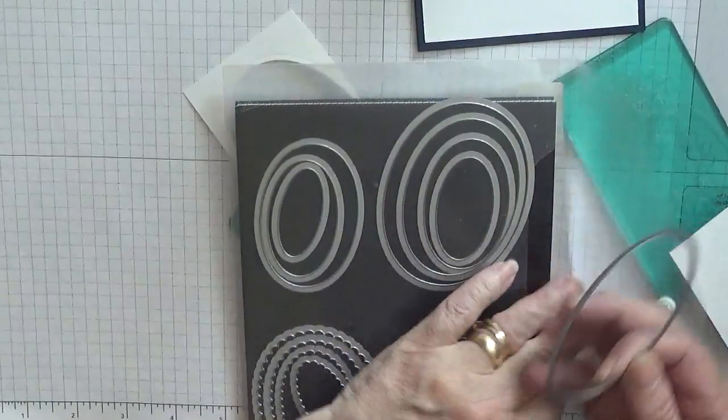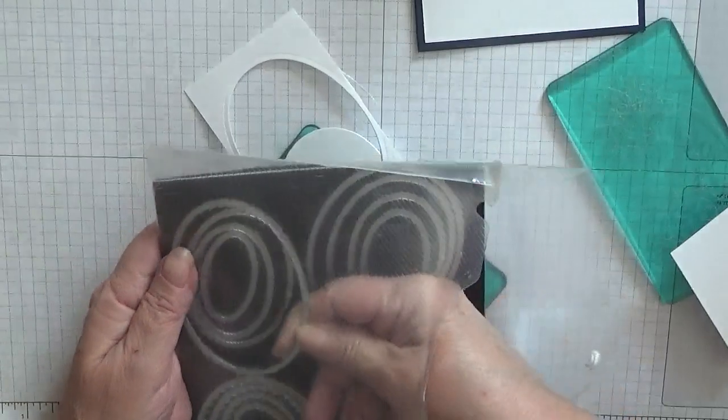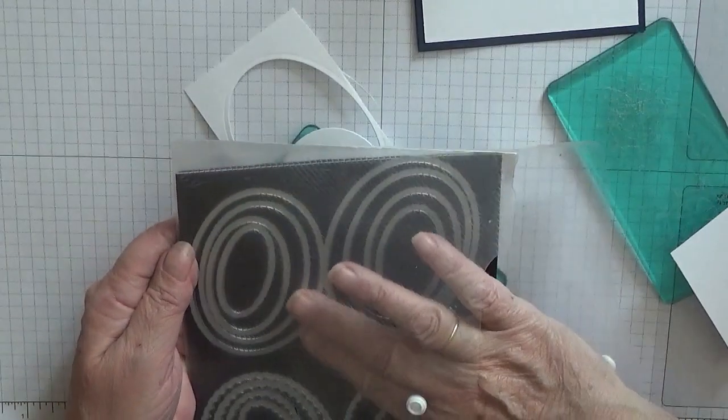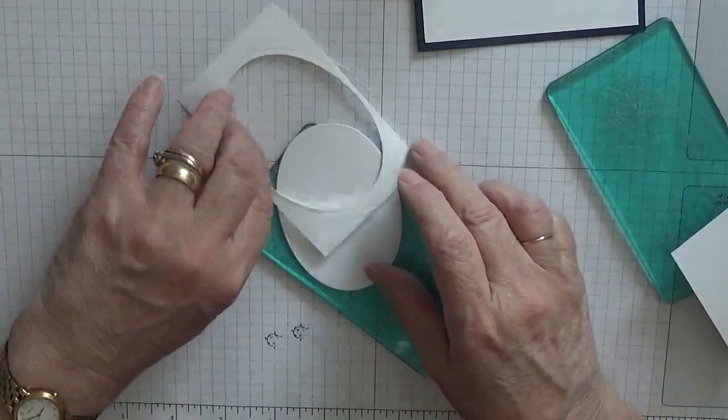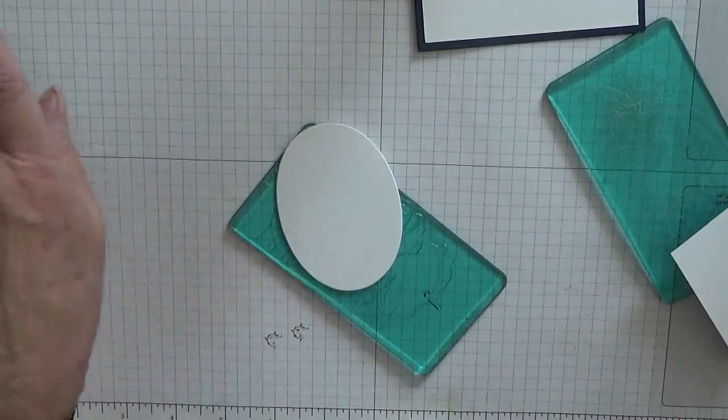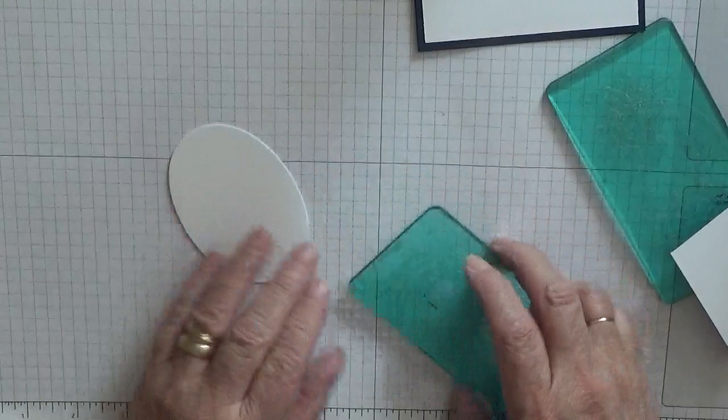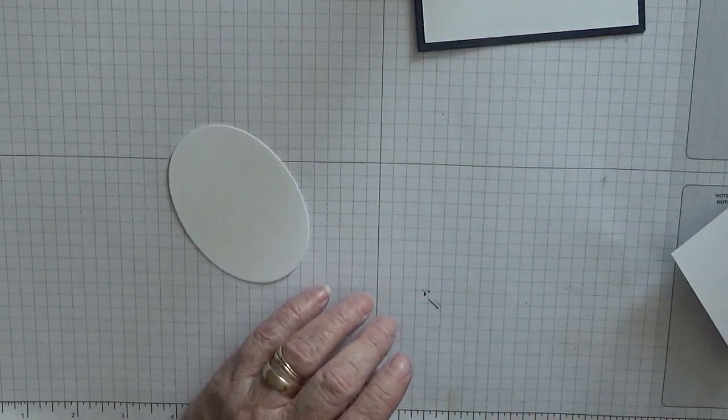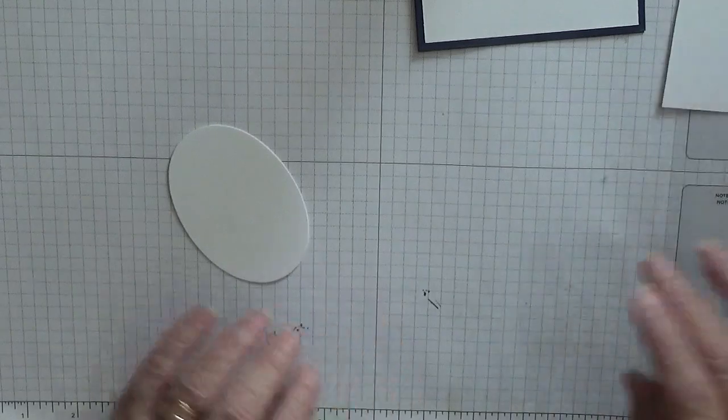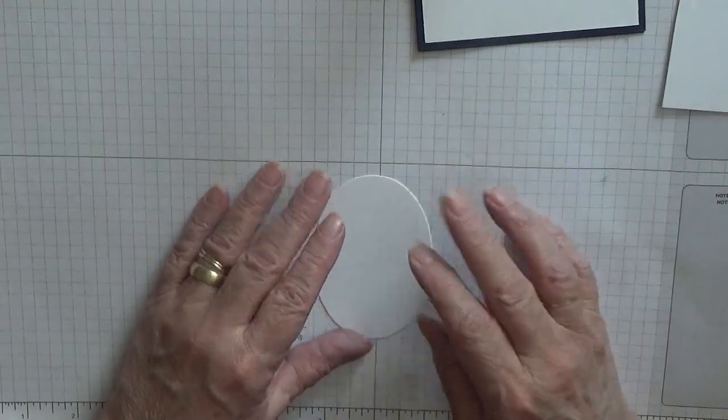There we have one oval. This one is the second largest oval from the nesting dies. That will come in so handy for cutting little things out, a nice present from my daughters for Mother's Day.